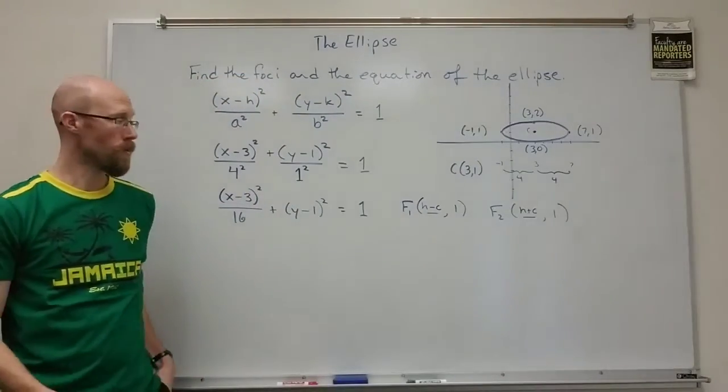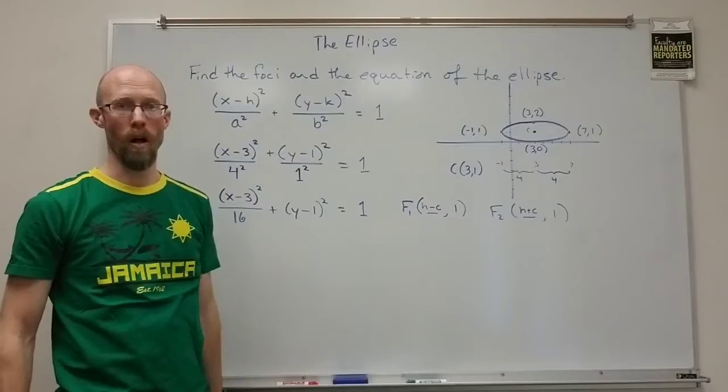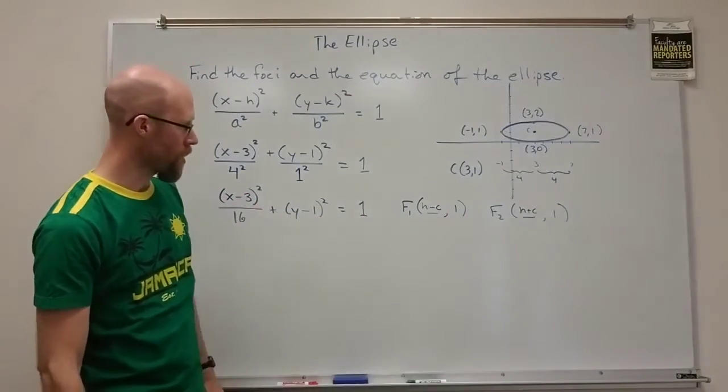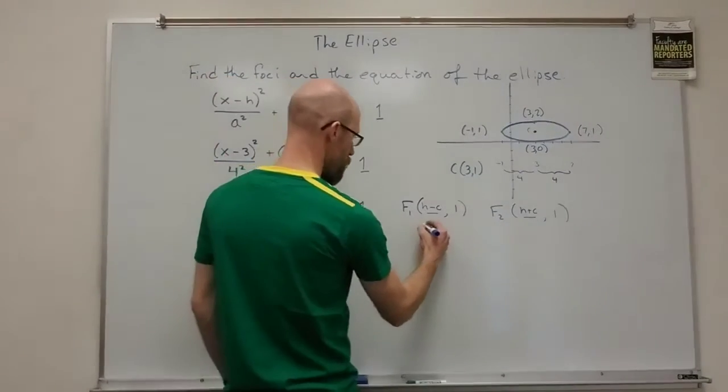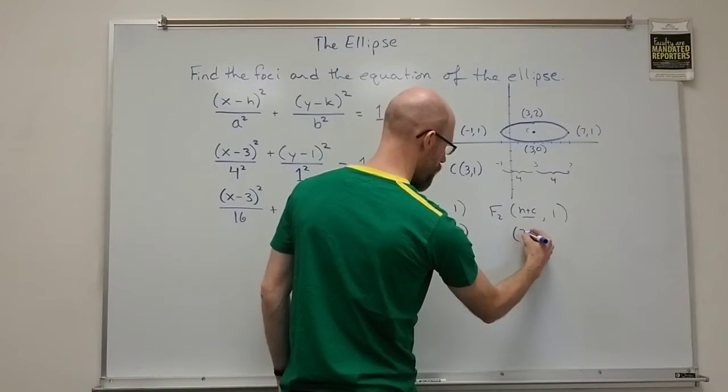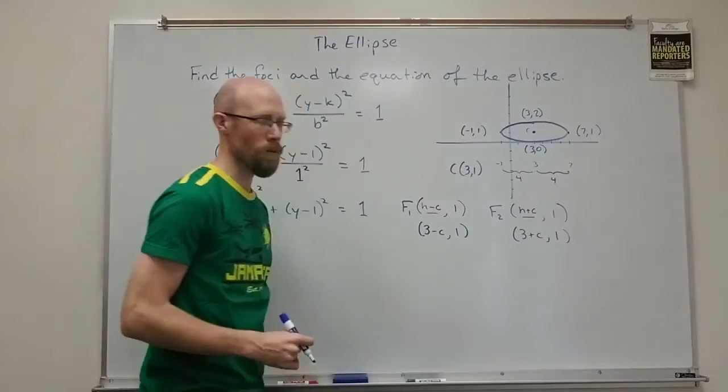Again the y value is just your k value so that's our our one. Now we need to figure out what h is. Well we know h is 3. So we could do 3 minus c comma 1 and 3 plus c comma 1. Now we just have to figure out what c is.